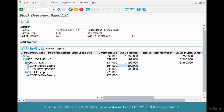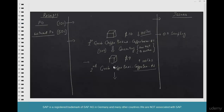So 331 was to remove from quality inspection stock, and 333 is to remove from unrestricted use. We don't need to remember all the movement types anyway — just note that 333 is issuing goods for QA sampling.